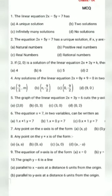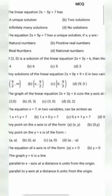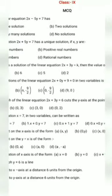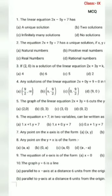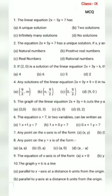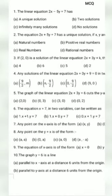Question number 3. If (2, 0) is a solution of a linear equation, then K value will be 4, 6, 5, or 2. Simply put the value of x and y in the equation. We get 2 times 2 equals 4, so K is equal to 4. Option A.